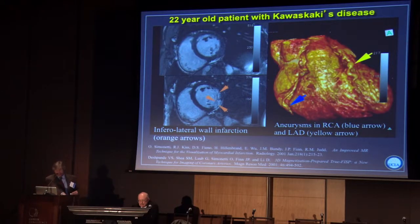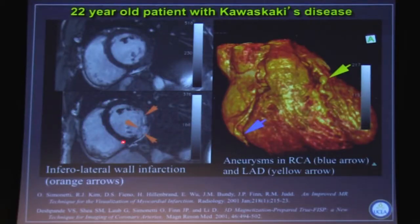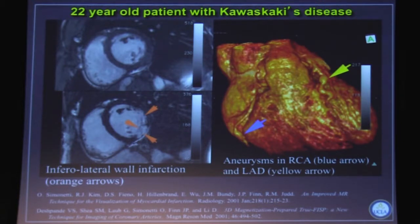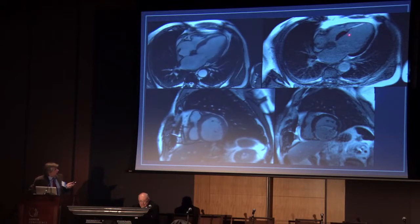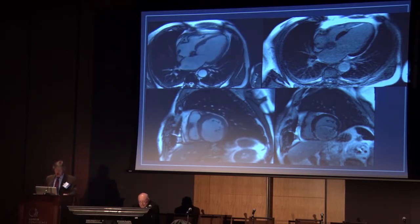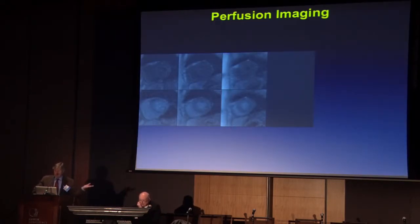That can be seen here in this contrast-enhanced delayed image showing enhancement of a good portion of the myocardium in the infralateral wall, due to a transmural infarction. This is most commonly used to look at patients with ischemic heart disease. Here's a patient with a big septal infarct, and also an infarct in the inferior and infraseptal and infralateral wall. This is where most of the action is numerically, but it can also of course be used in congenital heart disease, though it tends to be used less commonly.